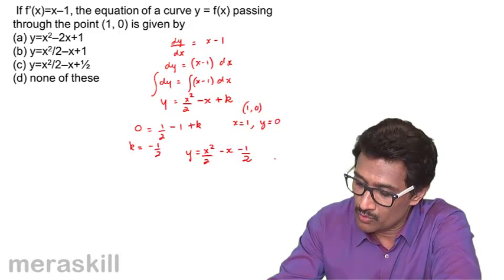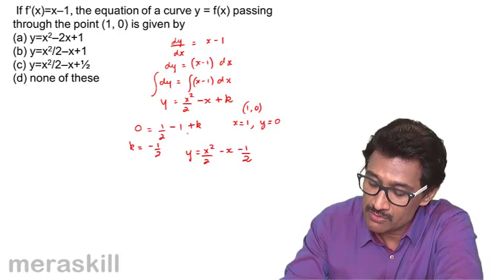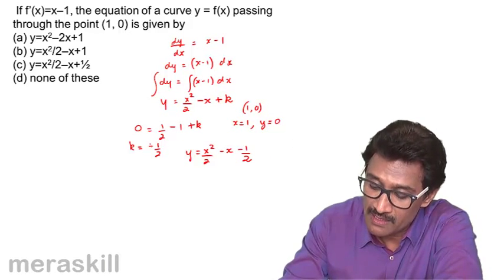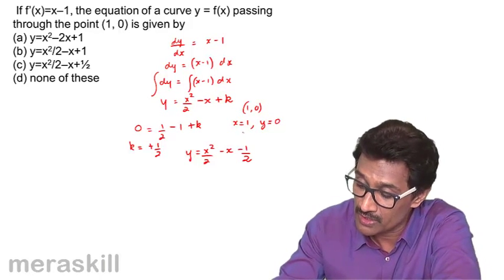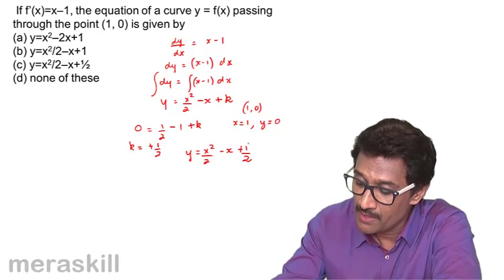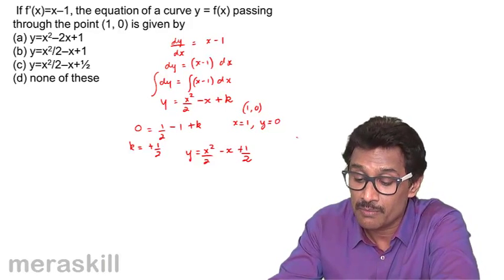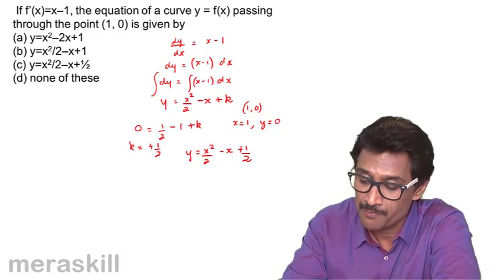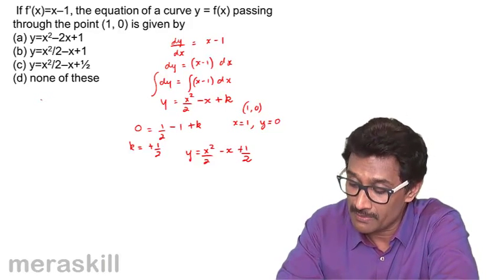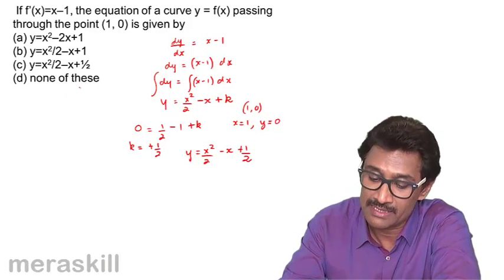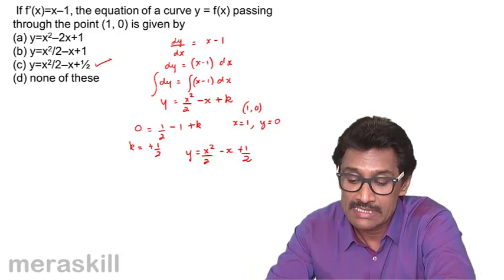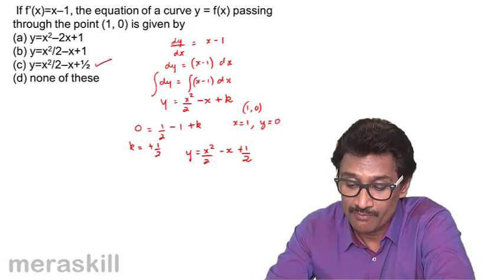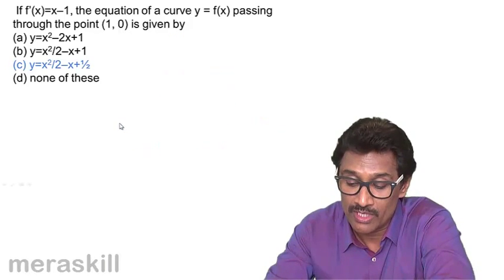Substituting: 0 = 1 squared by 2, that is one-half, minus 1 plus k. So k turns out to be minus one-half — actually, half minus 1 is minus half, so it goes to the other side and k = plus half. The equation of the curve is y = x squared by 2 minus x plus one-half. So the answer is option C.